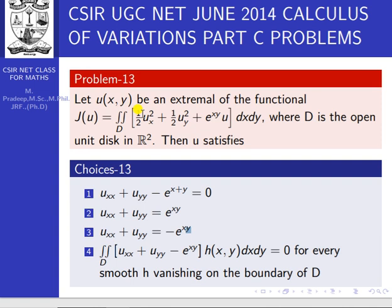Let u be an extremal of the functional j equal to the double integral over d of (1/2 ux squared plus 1/2 uy squared plus e^(xy) · u) dx dy, where d is the open unit disk in R².